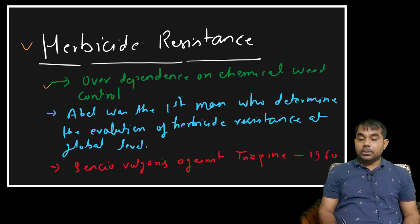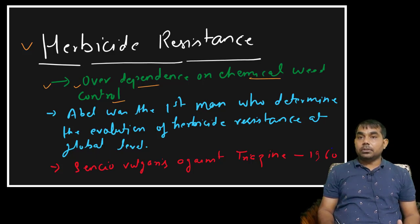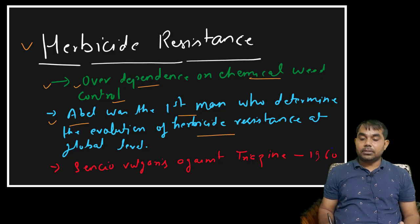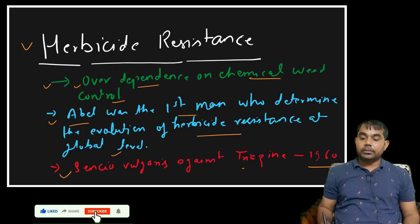One key point is the over-dependence on chemical weed control. With modernization of agriculture, we are now totally depending on chemical weed control, which is one reason why many biotypes of weed species are showing resistance to herbicides. Abel was the first person to determine the evolution of herbicide resistance at a global level. In 1960, he observed that Senecio vulgaris developed resistance against triazine.